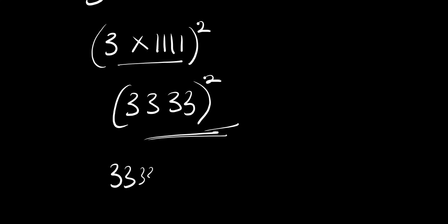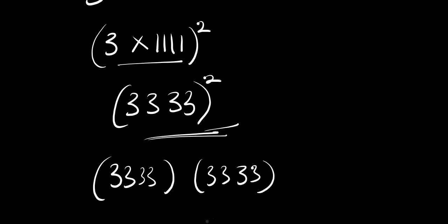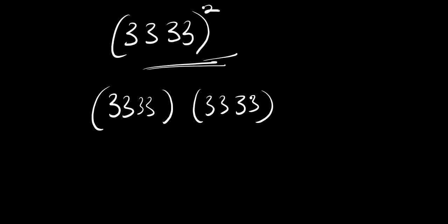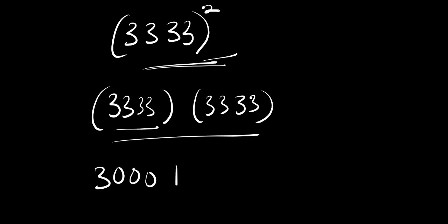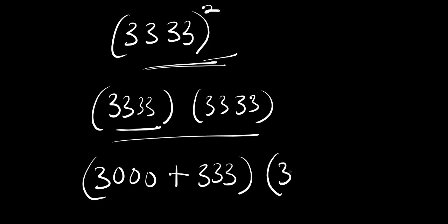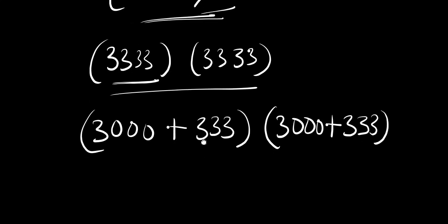So right now we can simply multiply 3333 times 3333. There is another method we are going to use — we can rewrite this as 3000 plus 333, and we have 3000 plus 333 again. So this will make it very fast for us to multiply out.